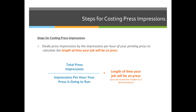You're not required to know the press speed — it'll be given to you. So if I tell you that a printing press can run 10,000 impressions per hour at $600 per hour, you can use that to calculate the total number of hours and the total cost for a printing job. Please take a minute to write down this formula: total press impressions divided by impressions per hour equals the total time your job will be on press.